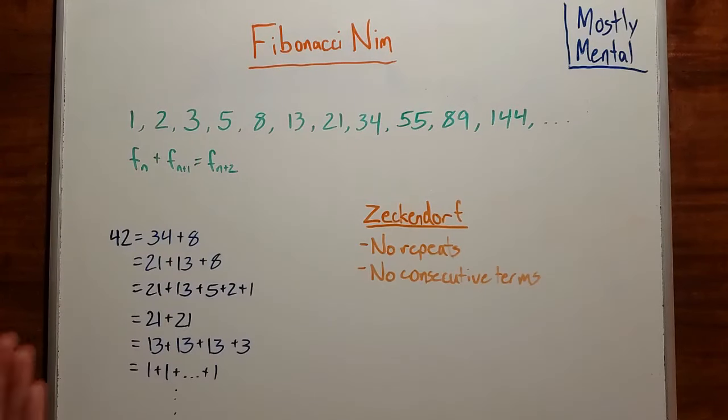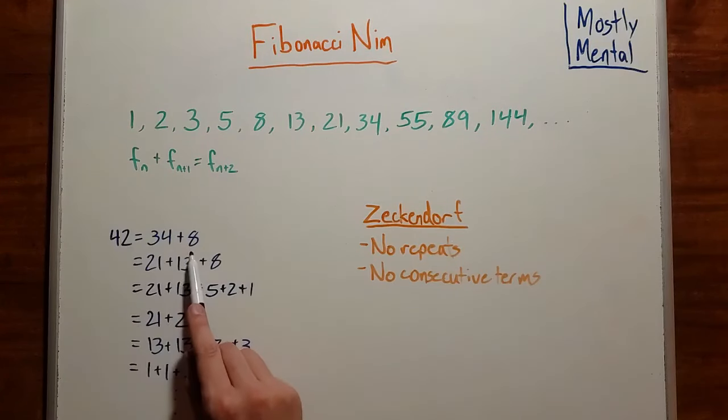Let's say we have a number, like 42, and we want to write it as the sum of Fibonacci numbers. Well, there are a lot of ways that we could do that. For instance, we could write it as 34 plus 8, or 21 plus 13 plus 8, or any of these different ways.